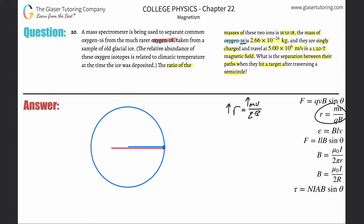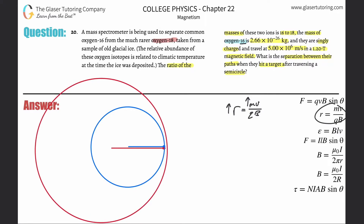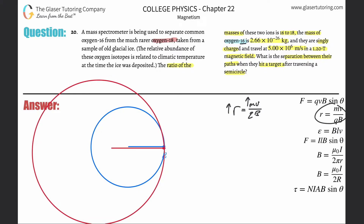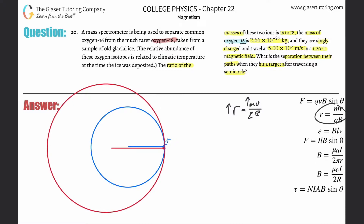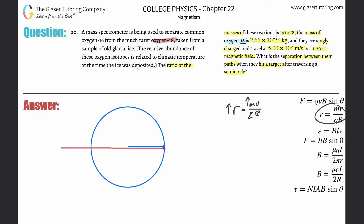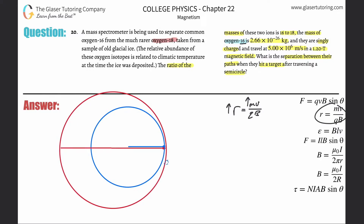I'm going to do the same thing for the red particle, drawing a bigger circle since oxygen-18 has a larger radius. Let me adjust the red circle to get it close enough to accurate.